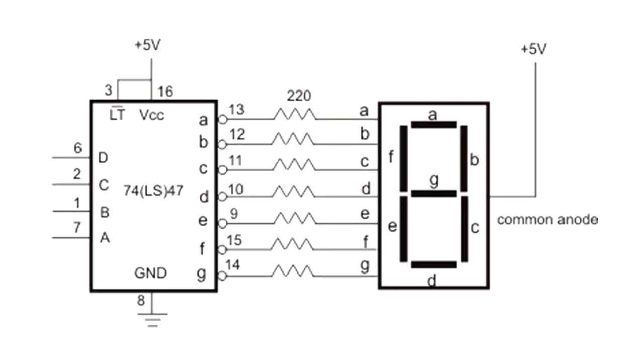7447 is another important integrated circuit, which is depicted by the block on the left. It has four inputs, capital A to D, and it has seven outputs, small a to small g. What this IC does is that when it gets input in binary format, it gives the output in seven segment format.